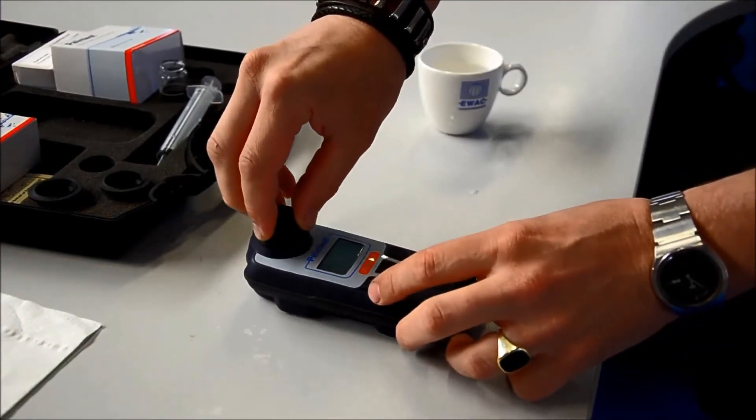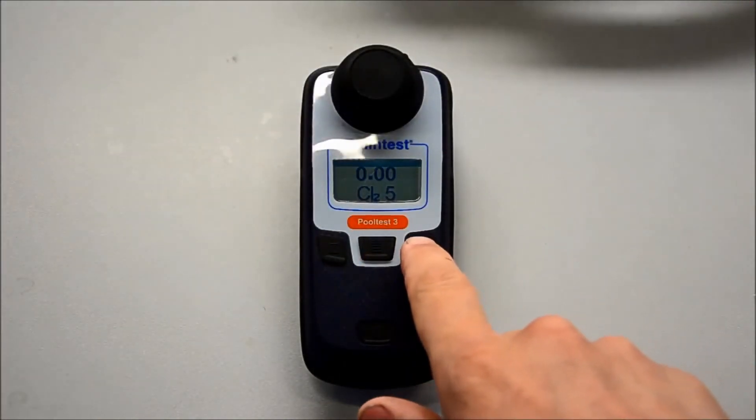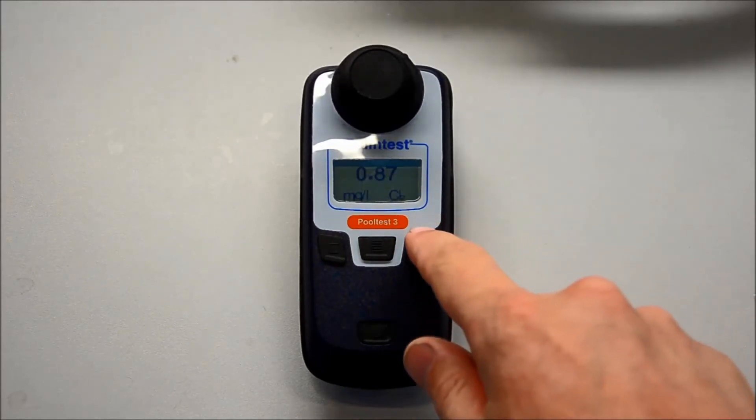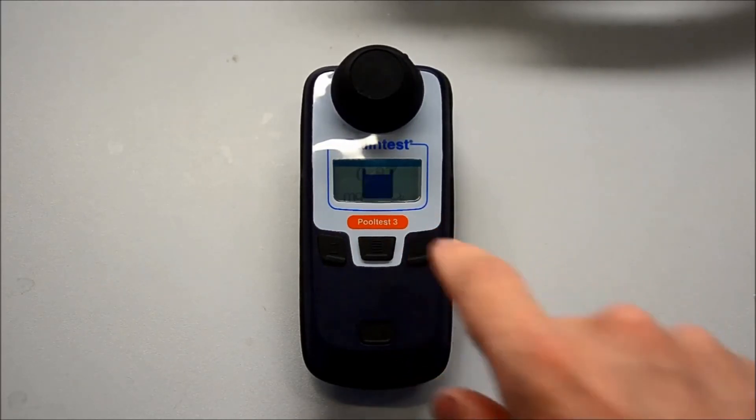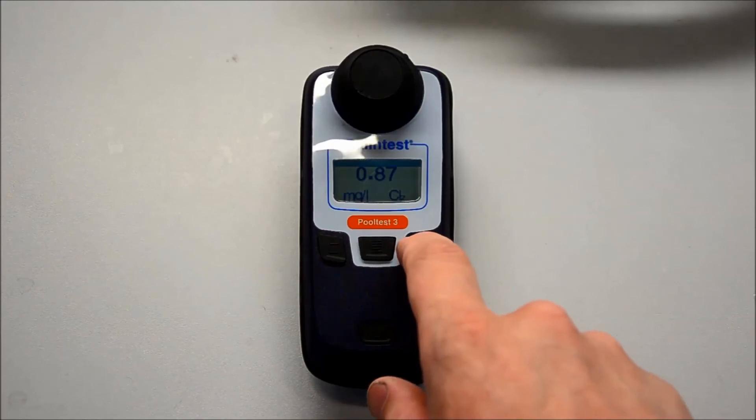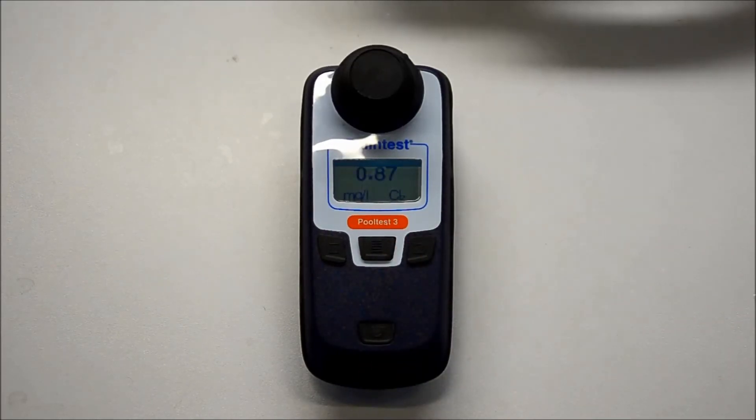Make sure that CL2-5 is highlighted. Then press the top right button to make a reading. As you can see the reading is 0.87 mg per liter. Repeat pressing the button to make sure the reading has stabilized. Once we are sure that the reading has stabilized, we can use the reading to calibrate the chlorine measurement of the Pool Pack.